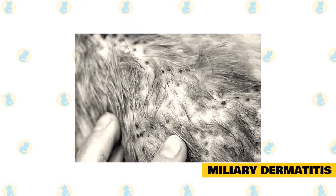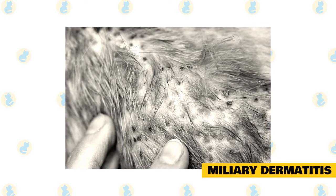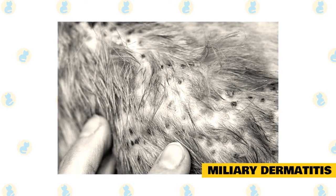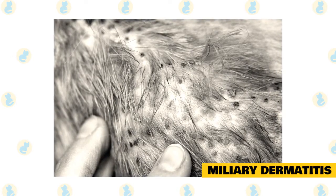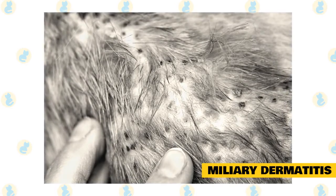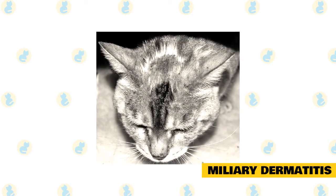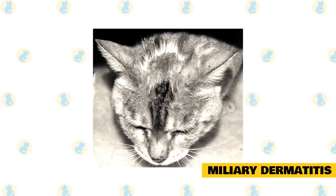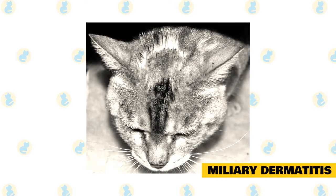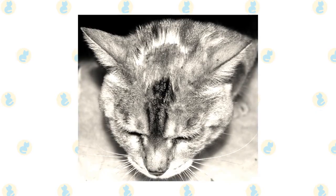Miliary dermatitis is a common class of feline skin disease in which numerous small, grainy bumps appear on the surface of the cat's skin. Named for the way the skin's texture resembles millet seeds, miliary dermatitis is considered a symptom, not a specific disease. The most common cause is hypersensitivity to flea bites, even in indoor-only cats. However, bacterial infections, ringworm, other parasitic infestations, autoimmune diseases, and certain cancers are also possible causes.